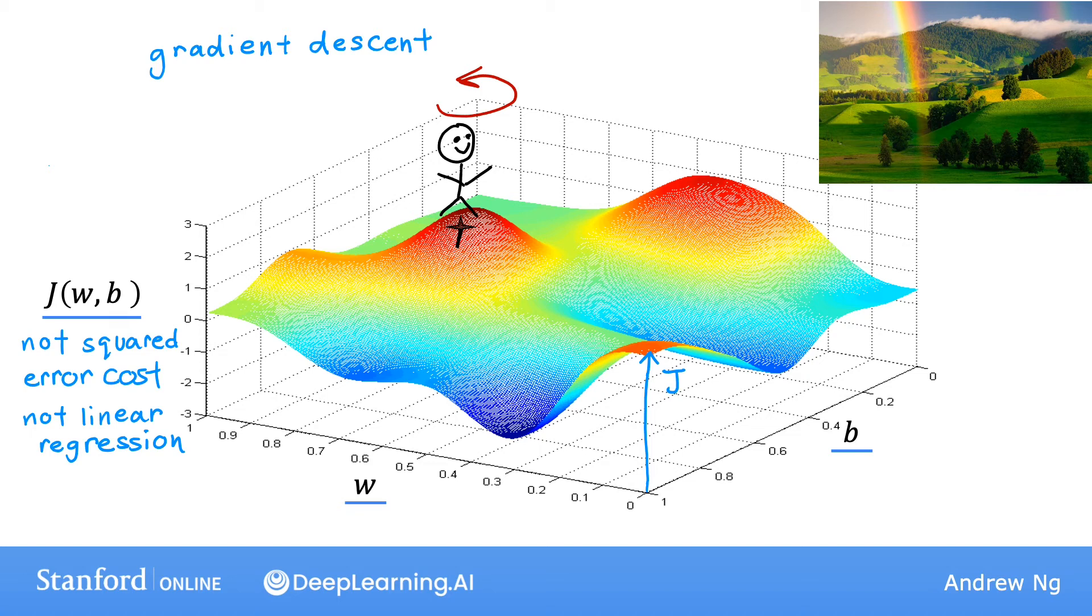After taking this first step, you're now at this point on the hill over here. Let's repeat the process. Standing at this new point, you're going to again spin around 360 degrees and ask yourself, in what direction would I take the next little baby step in order to move downhill? If you do that and take another step, you end up moving a bit in that direction and you can keep going. From this new point, you can again look around and decide what direction would take you downhill most quickly. Take another step, another step, and so on, until you find yourself at the bottom of this valley at this local minimum right here. What you just did was go through multiple steps of gradient descent.